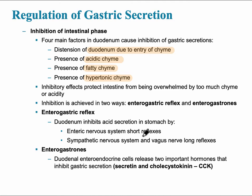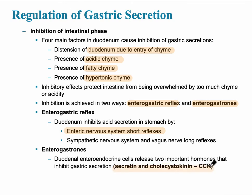The two ways this inhibition happens are via the enterogastric reflex and hormones called the enterogastrons. The enterogastric reflex occurs when the duodenum inhibits acid secretion in the stomach through short-term and long-term nerve reflexes — the enteric nerve system short reflex and the long reflex via the autonomic nervous system. The enterogastrons are hormones: secretin and cholecystokinin, CCK.